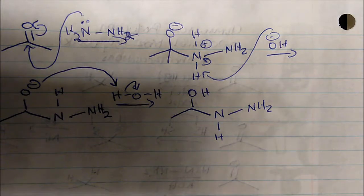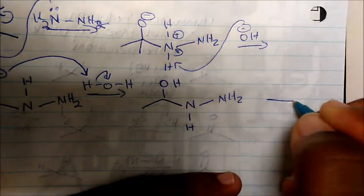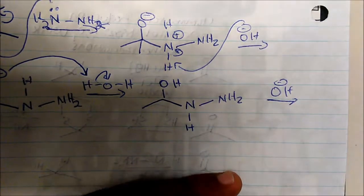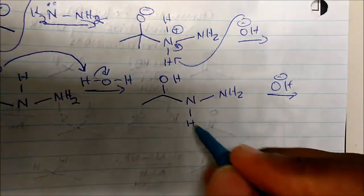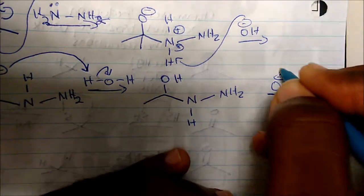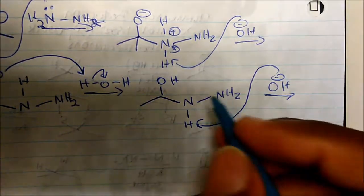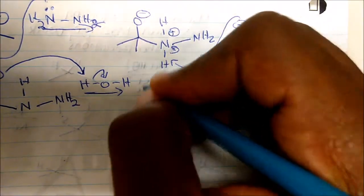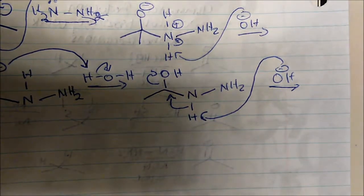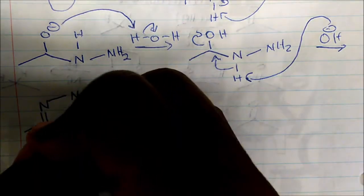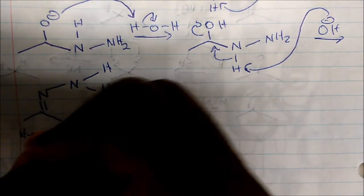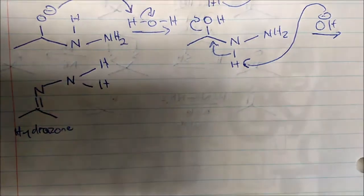In the next step, hydroxide is going to come in again. Remember, hydroxide is relatively basic and the hydrogens attached to the nitrogen are relatively acidic. So it's going to come in, act as a base, take off the hydrogen, and form a double bond while kicking off hydroxide. Once we do that, we form the hydrazone — we get a C=N double bond with a nitrogen bonded to two H's.